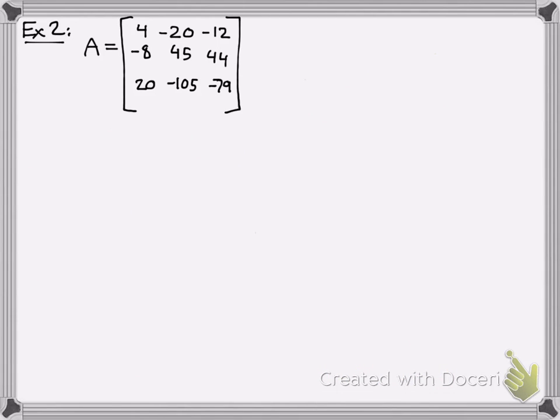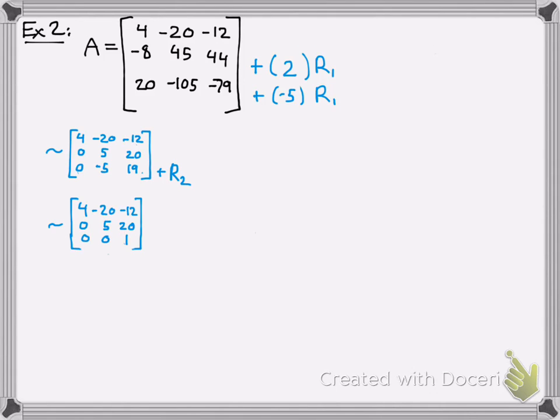Now we have a 3 by 3 matrix. So row reduction, I'm going to go through this fairly quickly. I encourage you to pause the video and see if you can do it on your own. Make sure you pause it. Okay. Here we go. So 2 times row 1, negative 5 times row 1 to row 3. You should get 4, negative 20, negative 12, 0, 5, 20, 0, negative 5, 19. Again, you're going to want to make sure everything below the pivot is 0 to get your upper triangular matrix. And you should get this matrix here.